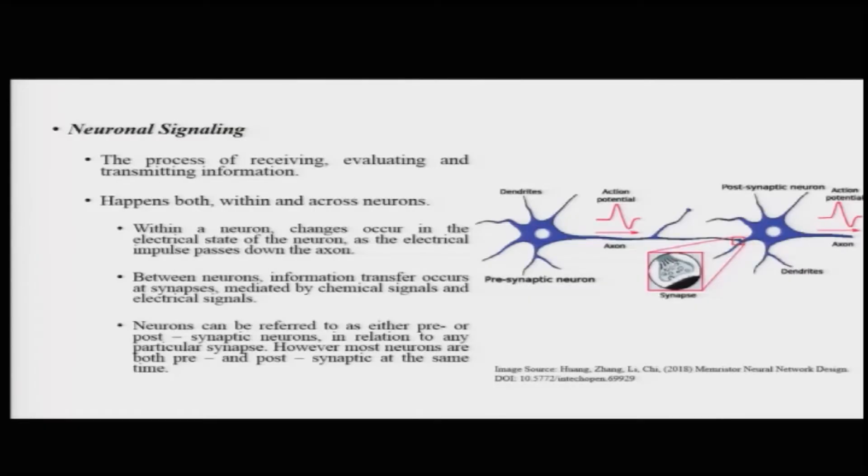When transmission happens within the neuron, changes in the electrical state of the neuron create a sort of electrical impulse that then passes down the length of the axon.